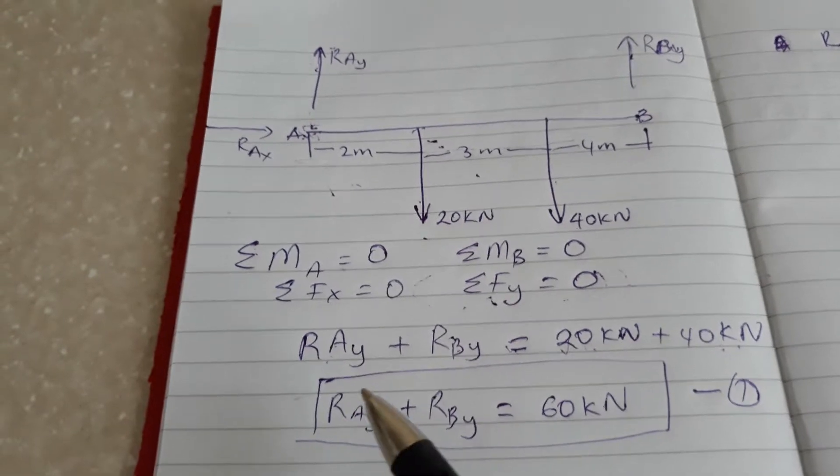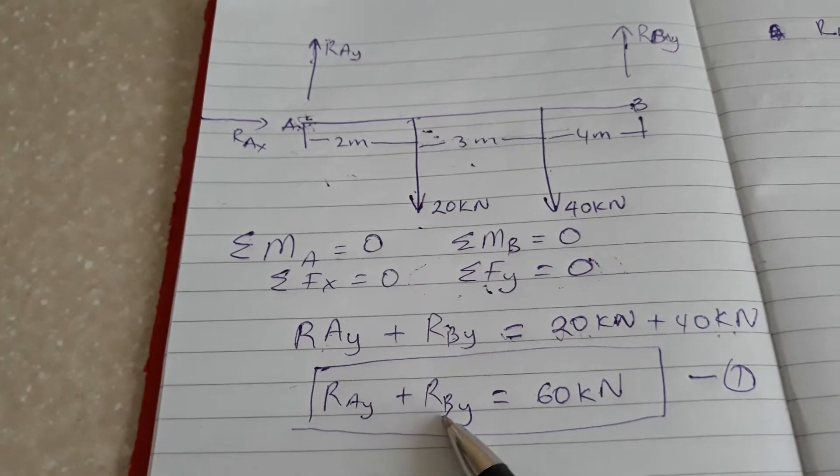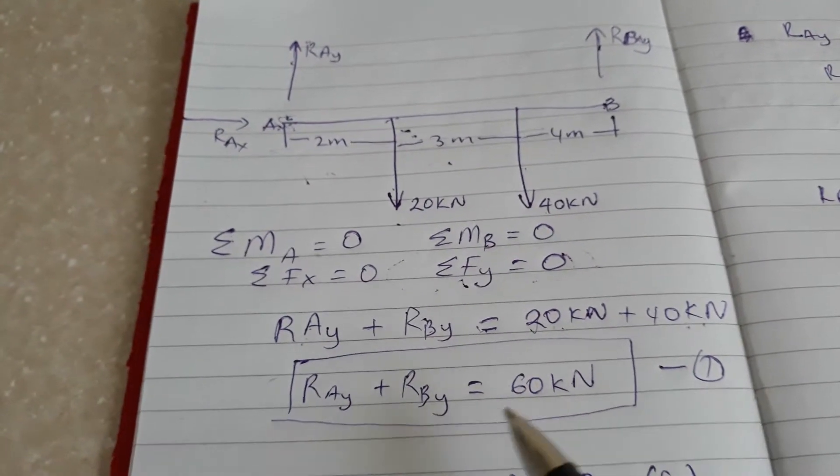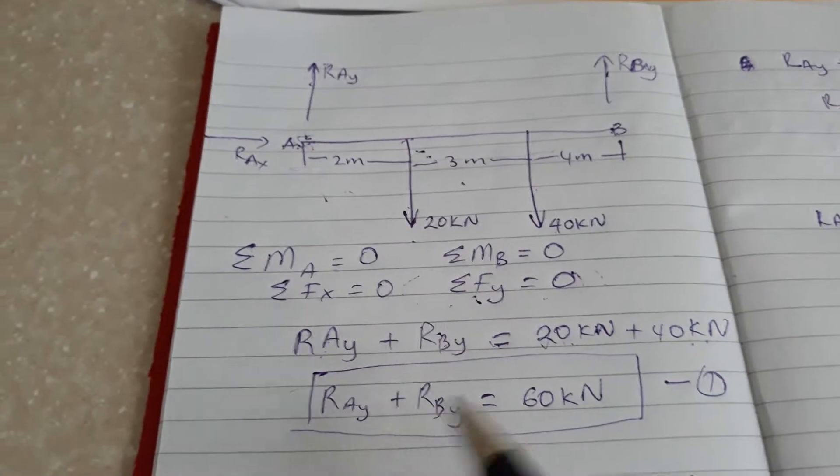So RAy plus RBy equals 20kN plus 40kN. Reaction A in the y direction plus reaction B in the y direction equals 60kN. This will be the first equation. Obviously we need to have another equation so we can solve to find both of them.